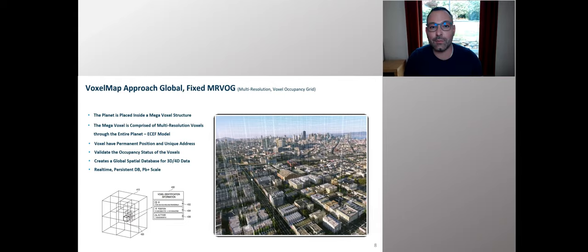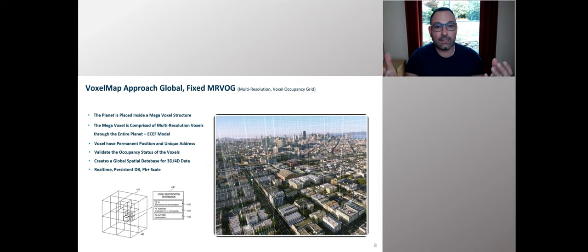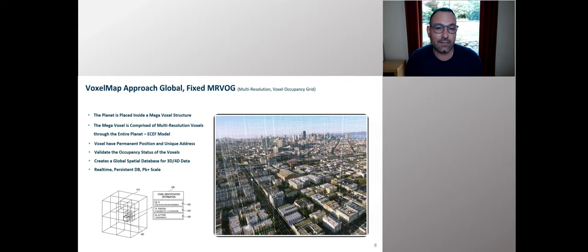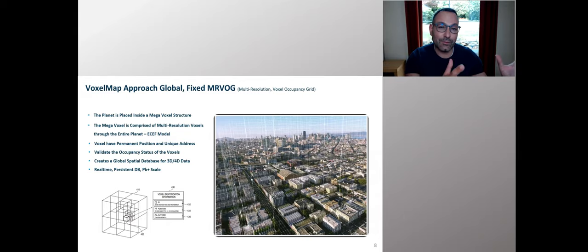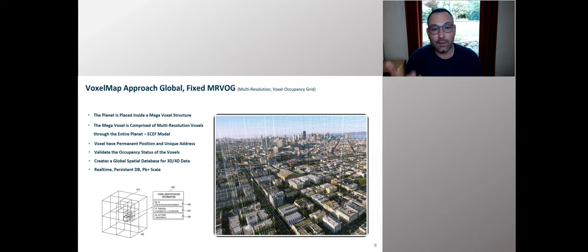We need to validate the occupancy status of each voxel — basically, is the voxel free space or is there something in it? We do this mainly using LIDAR. If the laser beam passes through the voxel and is not reflected, it's free space. If it's reflected off a surface, we collapse down to the smallest unit — currently 1 centimeter — and label it as occupied. In effect, we're etching out the matter of the planet and creating a global spatial database. The model is real-time, allowing real-time updates particularly where 5G is available. It's persistent — always on, always available — designed to be planetary scale, handling thousands of petabytes.